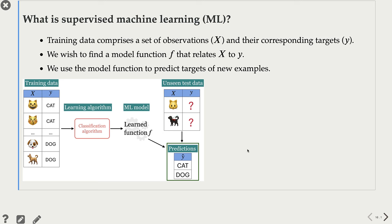So that's what we are interested in doing in supervised machine learning. We are given X and Y. We want to learn this model function F, and then we want to apply this model function to predict targets of new examples.